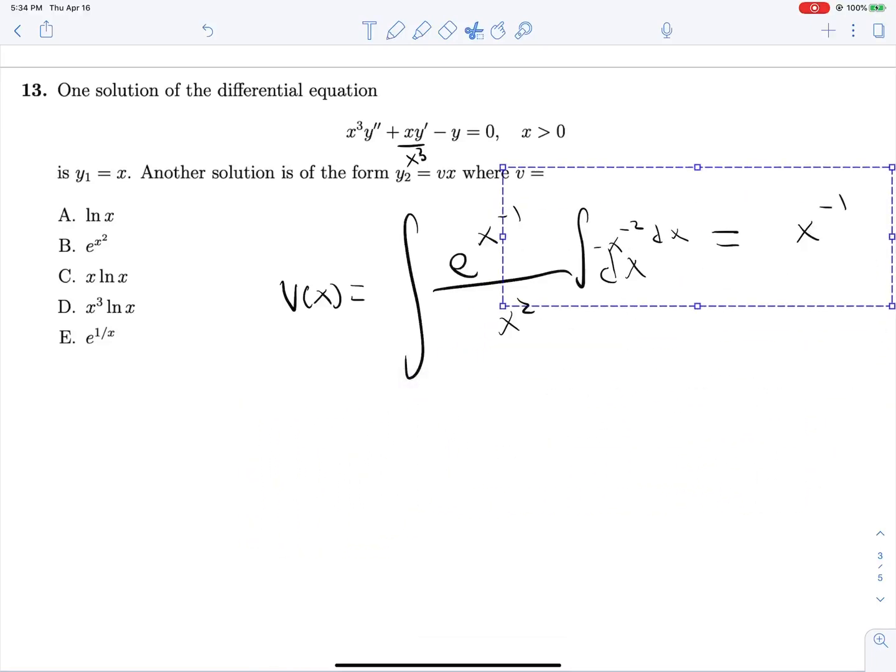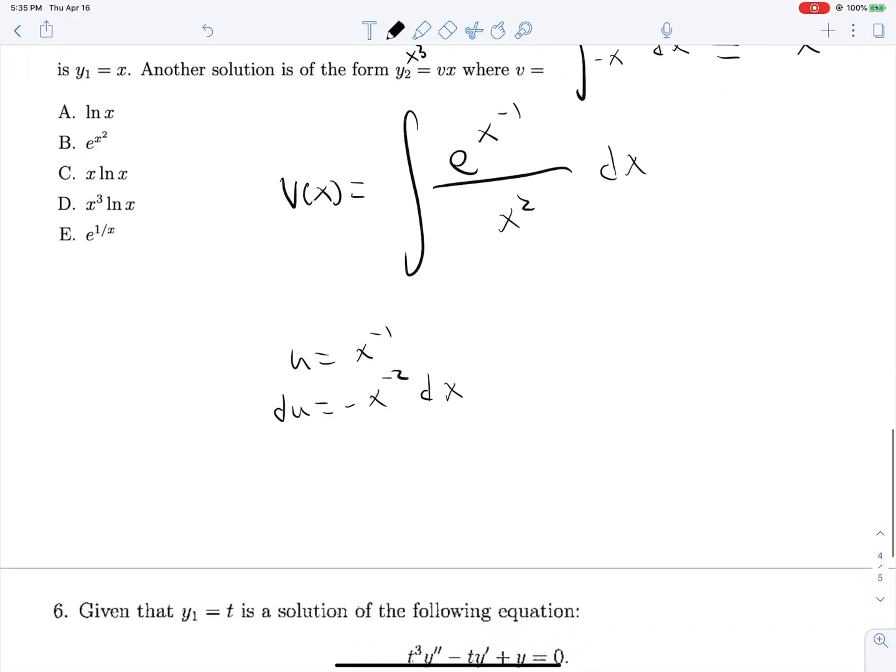And now we're going to do a little u substitution, it looks like, because we can say that u equals x to the negative 1, and du is negative x to the negative 2 dx. And so dividing that out, dividing out our term right here, and replacing x to the negative 1 with u,